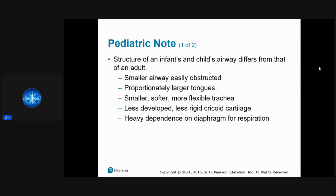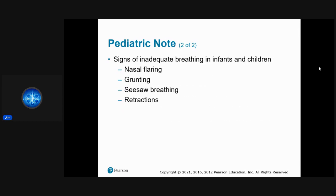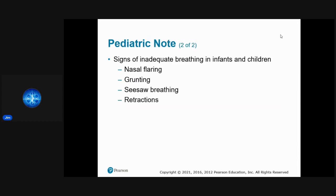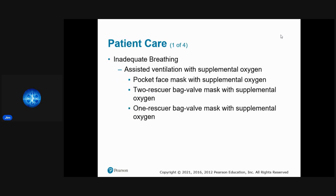Signs of inadequate breathing in infants and children include nasal flaring, grunting, seesaw breathing, and retractions. Seesaw breathing is where the belly and chest alternate — belly out, chest in, back and forth. Retractions are sunken-in areas where they're working hard to breathe, visible in the clavicle area and intercostal spaces.